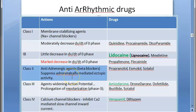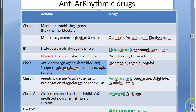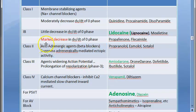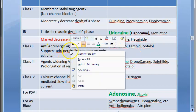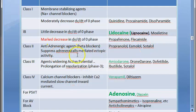Class 2 drugs are anti-adrenergic drugs — beta blockers like propranolol and esmolol. They suppress adrenergically mediated ectopic activity.